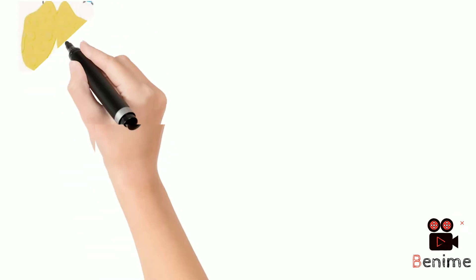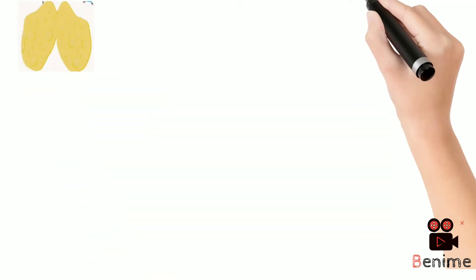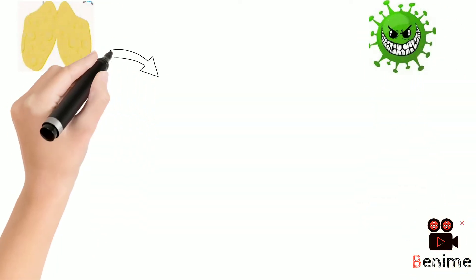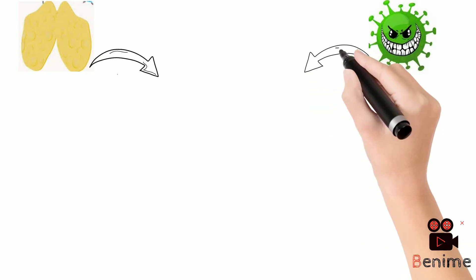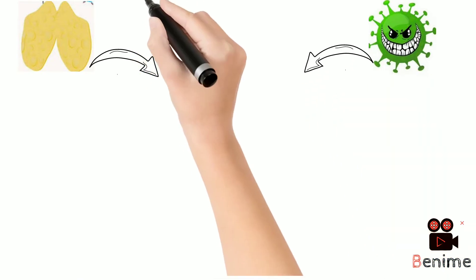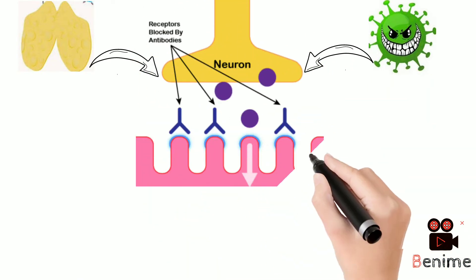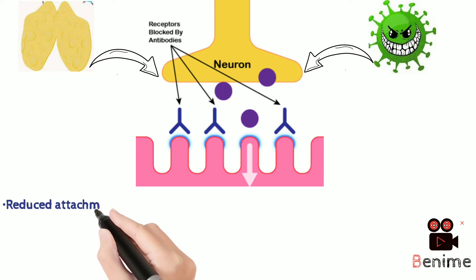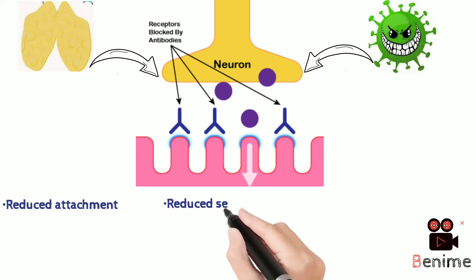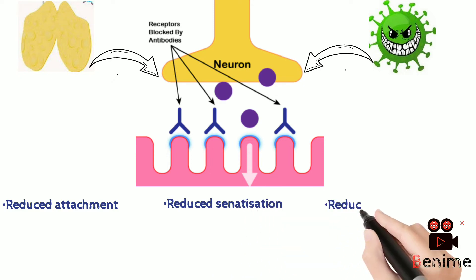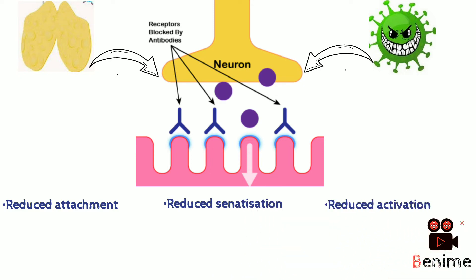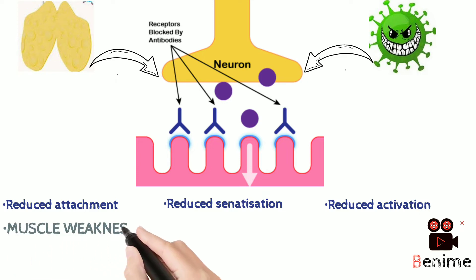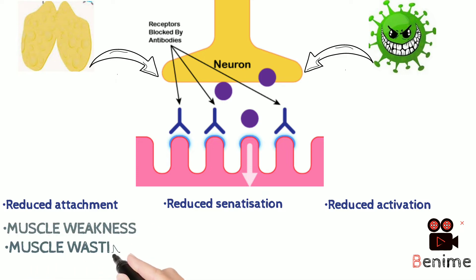In myasthenia gravis, due to conditions like thymus gland abnormalities and previous infections, certain special types of antibodies are formed which attach to acetylcholine receptor sites. This leads to less attachment of acetylcholine molecules, reduced sensitization of tissue, and reduced activation of muscular tissue — all of which leads to muscle weakness, muscle wasting, and generalized fatigue.